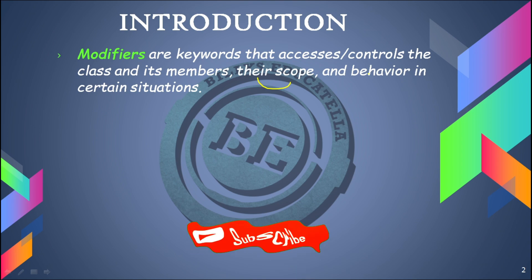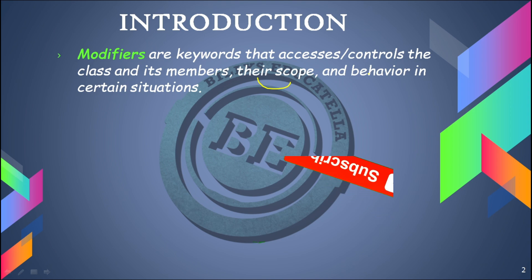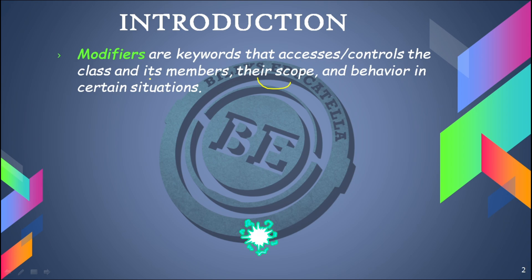As I said, access modifiers are explained in the previous video session. Now let us discuss about the non-access modifiers. You may have a doubt about what are the members — in a class we have objects, variables, and methods. These three are named as the members of a class.